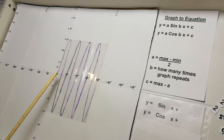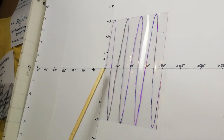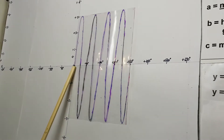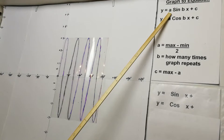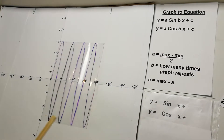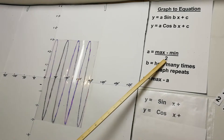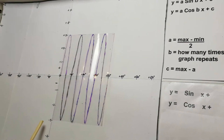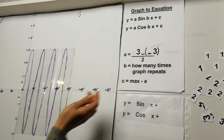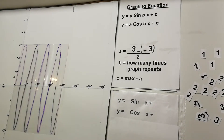Now we have another graph — slightly different color. This graph starts in the center, so it's a sin graph. Using y = a·sin(bx) + c: the maximum is 3 and the minimum is negative 3, so 3 minus negative 3 = 6, divided by 2 = 3. So the a value is 3.